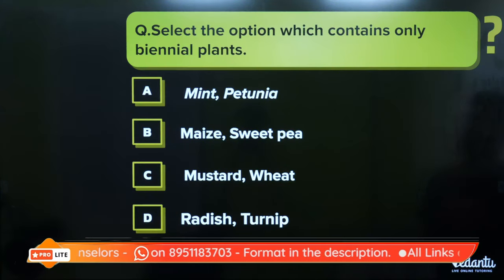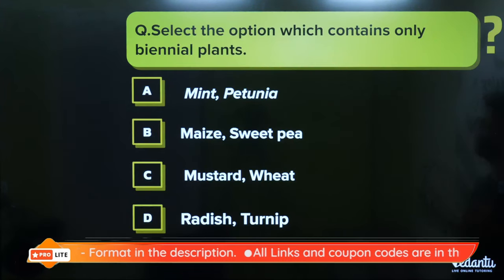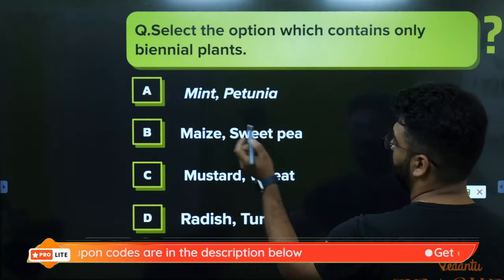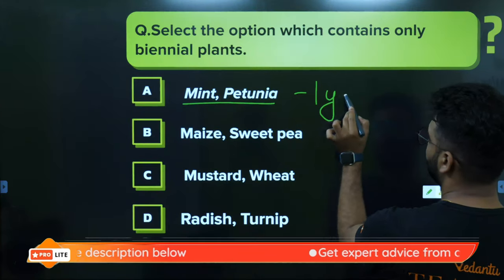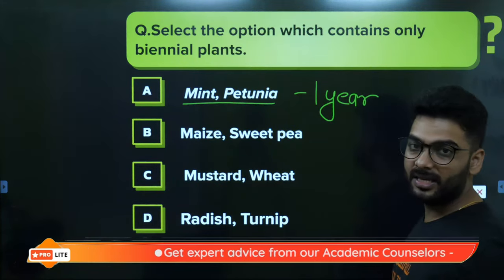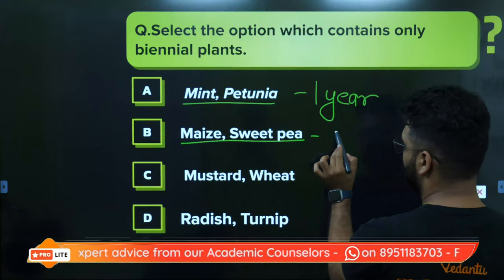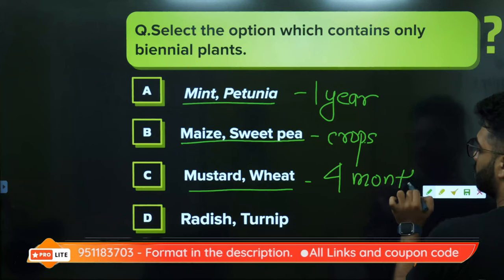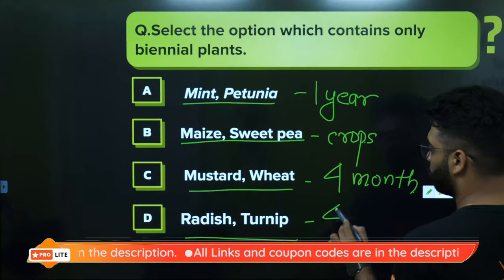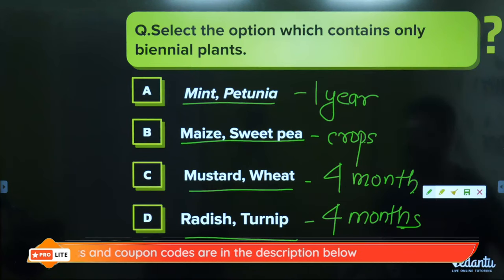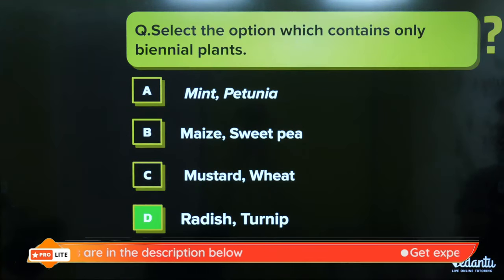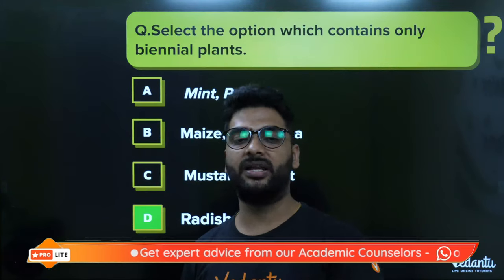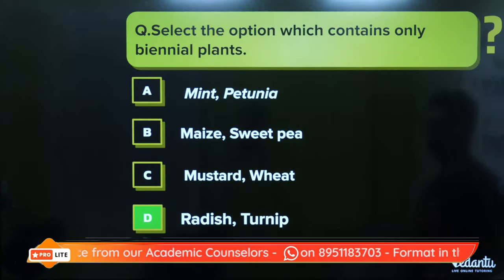Select the option which contains only biennial plants. Biennial plants live for two years. Mustard and wheat live only for about four months, so they are annual. Radish and turnip: for the first year they are in the vegetative phase, and in the second year they flower and produce fruit. So radish and turnip are biennial plants, making that the correct option.